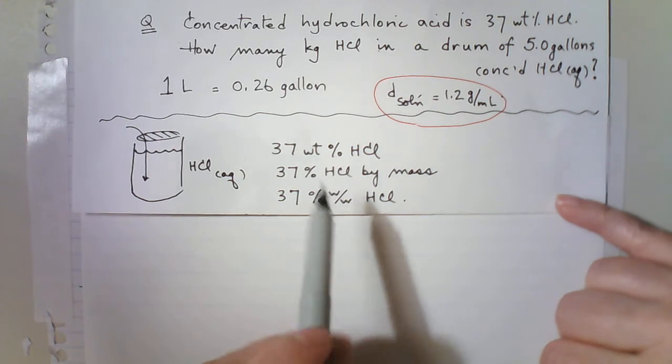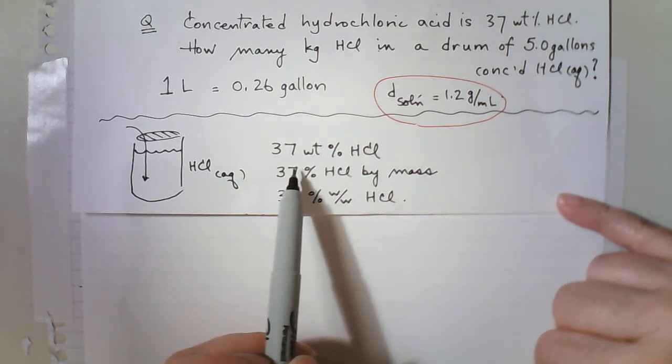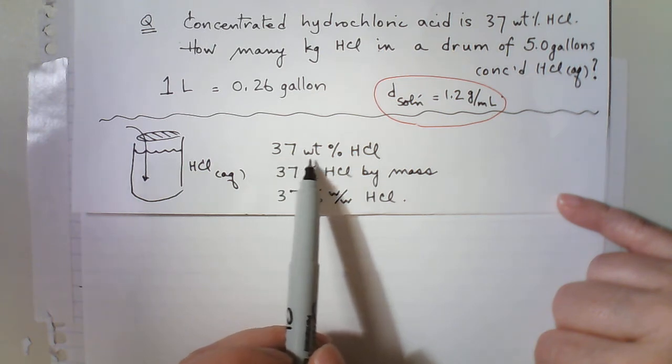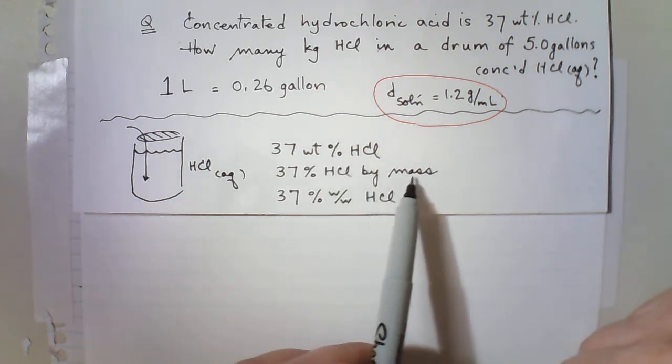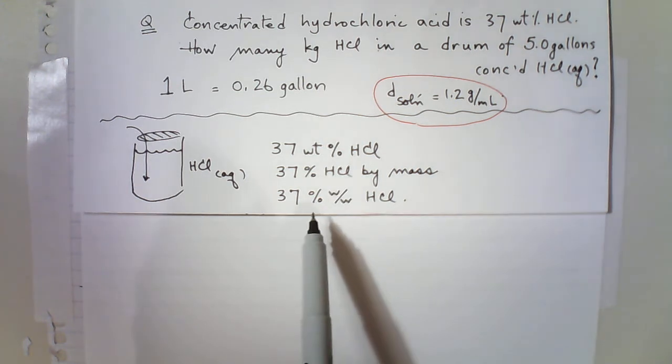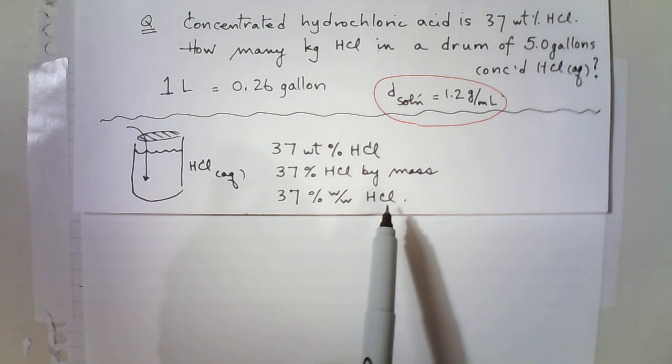And so it's written in different ways on labels as 37 weight percent HCl, 37 percent HCl by mass, or 37 percent W over W weight for weight HCl. These are all different ways of saying the same thing.